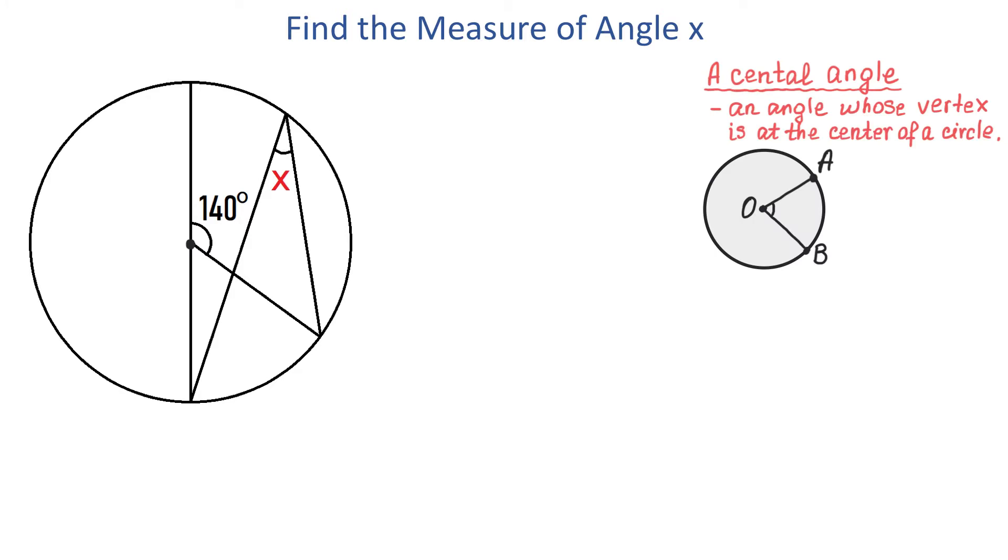Here to the right we have the definition and a central angle is an angle whose vertex is at the center of a circle. So if this angle measures 80 degrees then we can write that angle AOB equals 80 degrees.